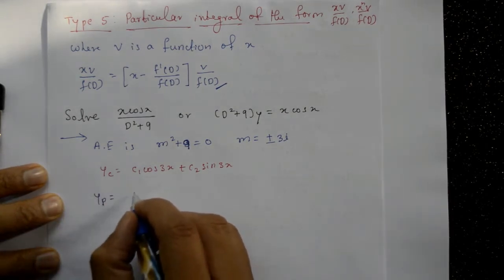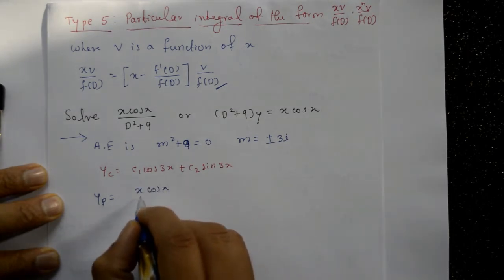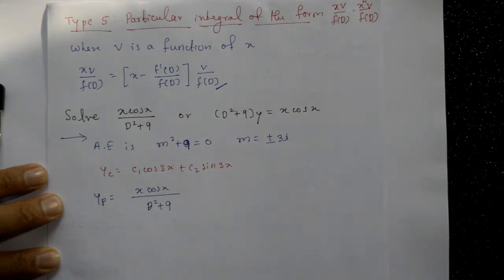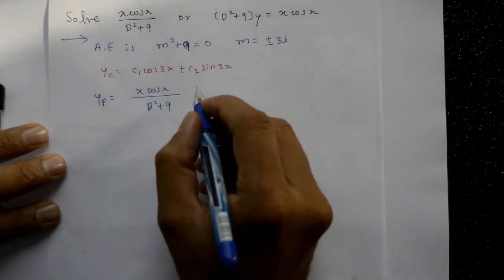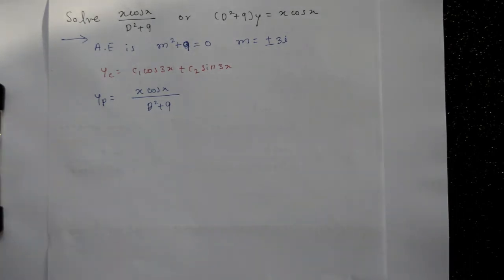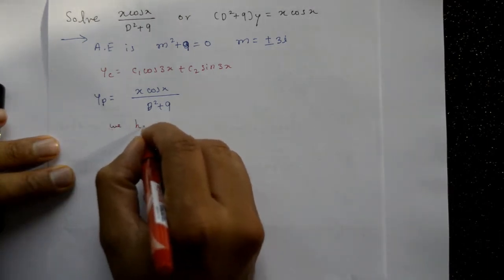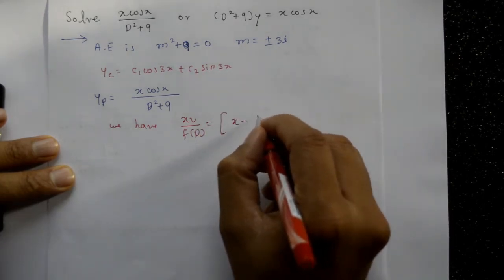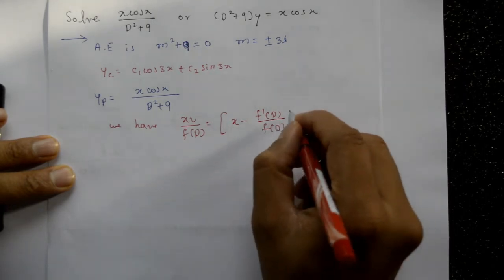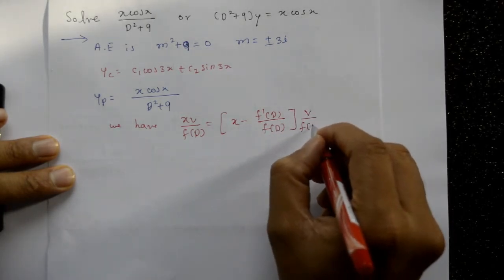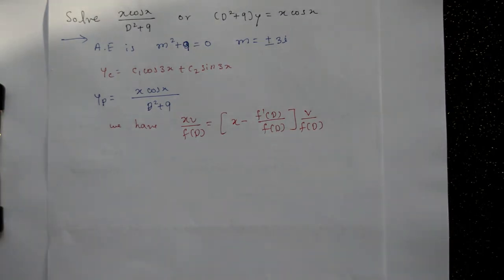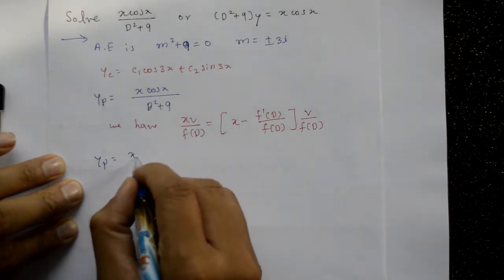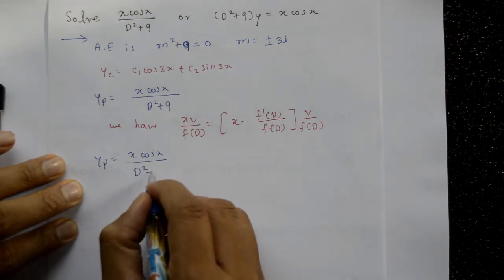Now find the particular integral. yp = x·cos(x) / (D²+9). Using the Type 5 formula, x·φ/f(D) = [x − f'(D)/f(D)]·φ/f(D), where φ = cos(x) and f(D) = D²+9.